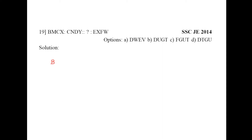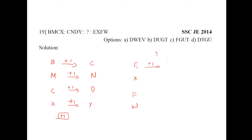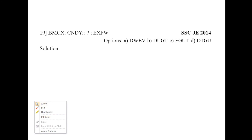Next question: B M C X, C N D Y, and we need to find E X F W — what is the question mark? B to C is plus 1, M to N is plus 1, C to D is plus 1, X to Y is plus 1. So the logic is plus 1. E plus 1 gives F. Checking options: option A starts with D — not an option. Option B starts with D — not an option. Option C starts with F — that may be the answer. X plus 1 is Y, F plus 1 is G, W plus 1 is X. So option C, F Y G X.